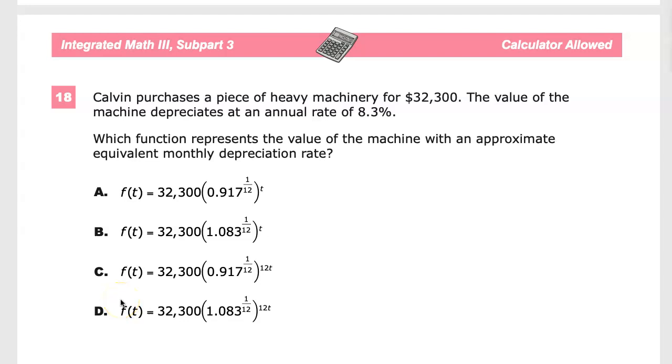This is the integrated math 3 practice test for T and ready. Currently, we're on question number 18. Calvin purchases a piece of heavy machinery for $32,300. The value of the machine depreciates, so that's important for us, at an annual rate of 8.3%. Annual rate matters here. Which function represents the value of the machine with an approximate equivalent monthly depreciation rate?